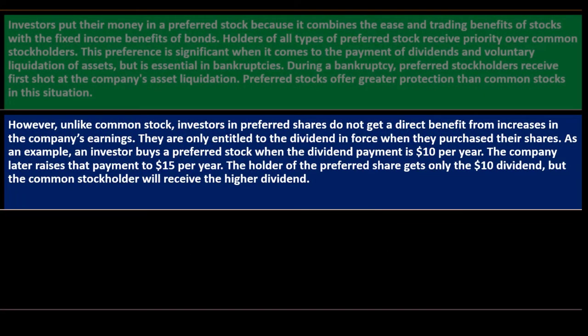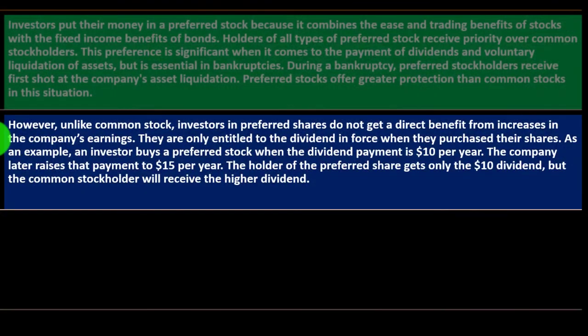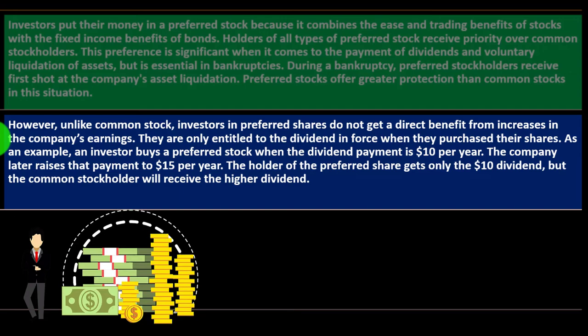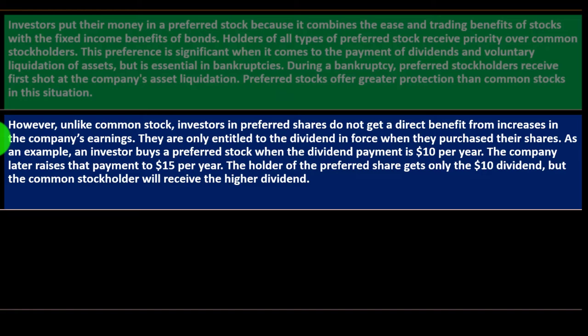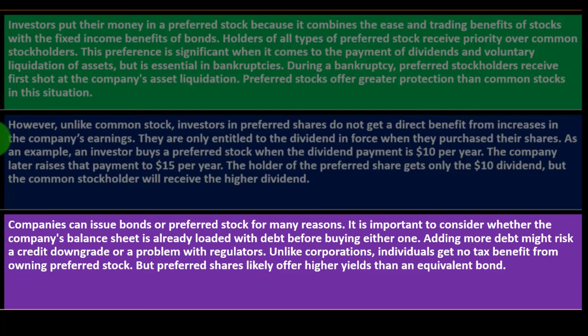Common stocks may outpace preferred stocks when times are good. However, unlike common stock investors, preferred stockholders do not get a direct benefit from increases in the company's earnings. They are only entitled to the dividend in force when they purchased their shares. For example, if an investor buys a preferred stock paying ten dollars per year and the company later raises that payment to fifteen dollars, the preferred holder still only gets ten dollars while the common shareholder receives the higher dividend.